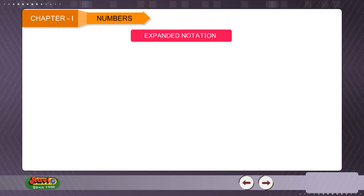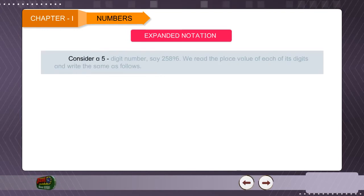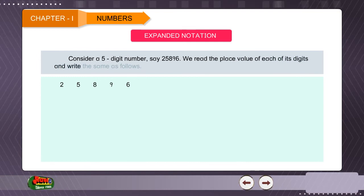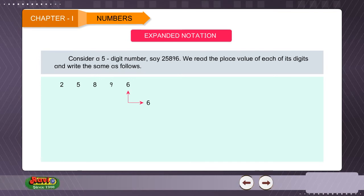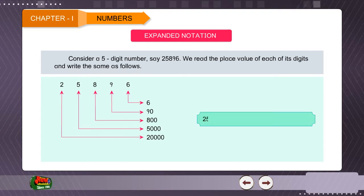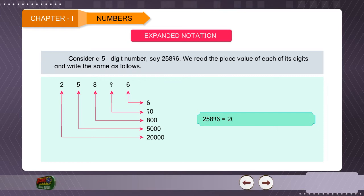Expanded Notation. Consider a 5-digit number, say 25,896. We read the place value of each of its digits and write the same as follows: 6 ones, 90 tens, 8 hundreds, 5 thousands, and 20 thousands. So, 25,896 = 20,000 + 5,000 + 800 + 90 + 6.